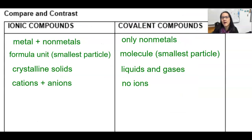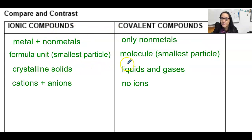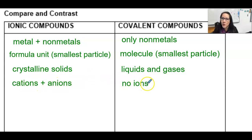Let's compare ionic to covalent compounds. If it's ionic, it's a metal and a non-metal; if it's covalent, it's two or more non-metals. If it's ionic, it's called a formula unit — the smallest particle of an ionic compound; if it's covalent, it's called a molecule. If it's ionic, it exists as crystalline solids; if it's covalent, it tends to be liquids and gases. If it's ionic, there are cations and anions; if it's covalent, there are no ions.